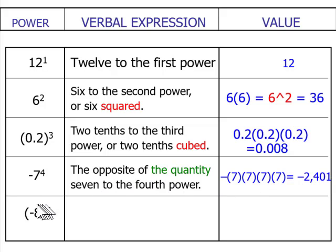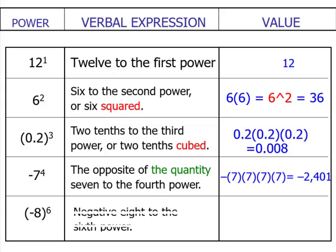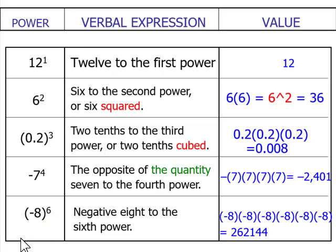Since we have parentheses around this negative number, we can read this as negative 8 to the sixth power. Since the exponent is even, we know the result would be positive, and that's 262,144.